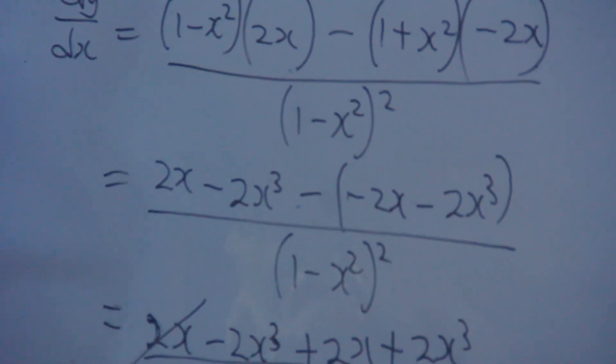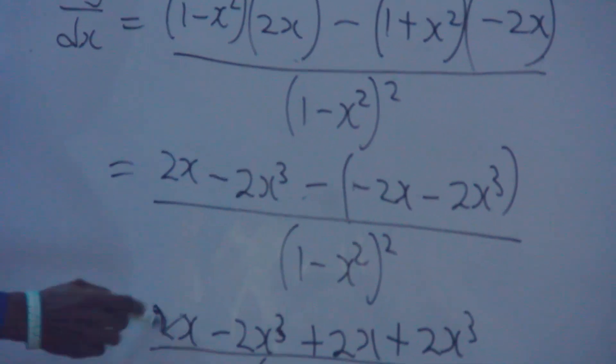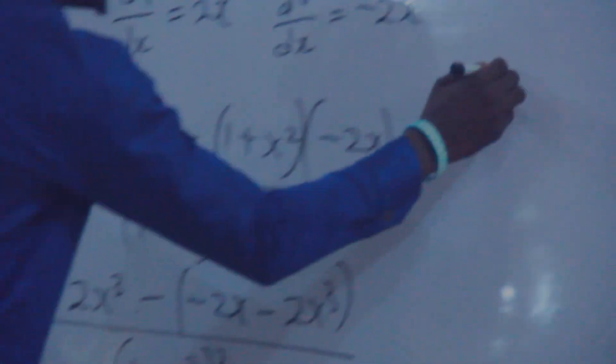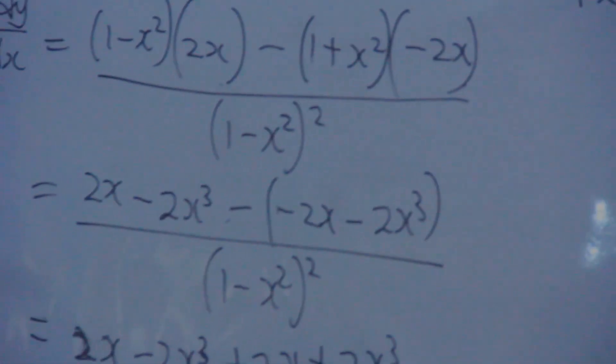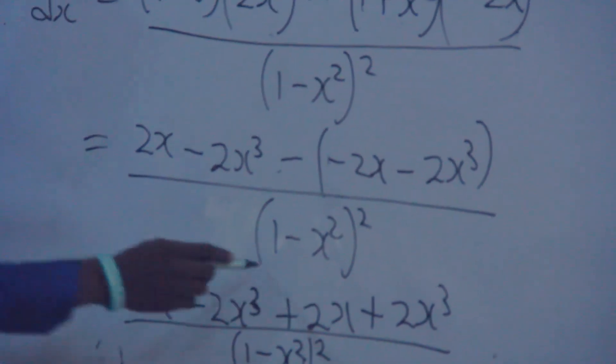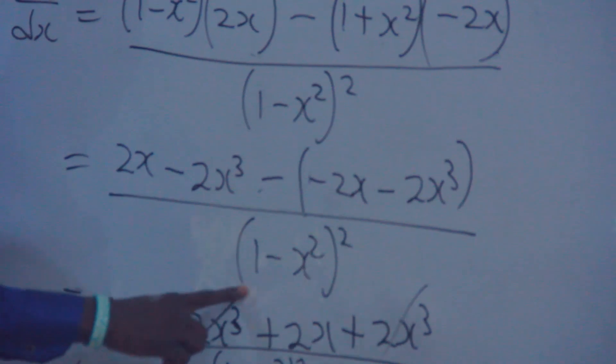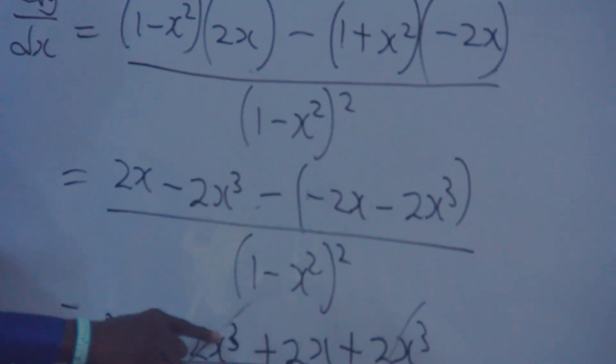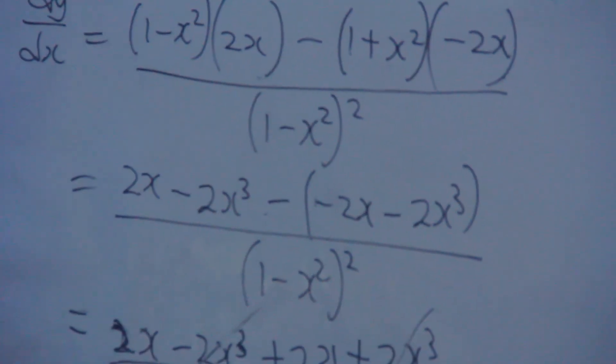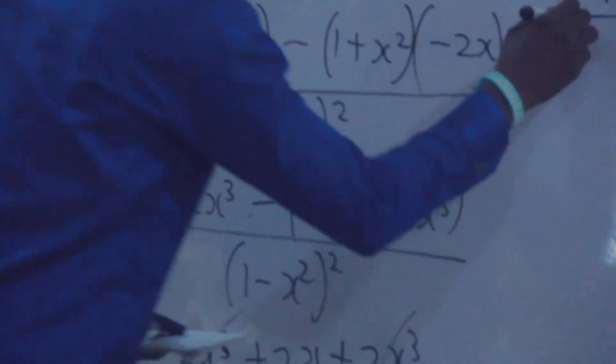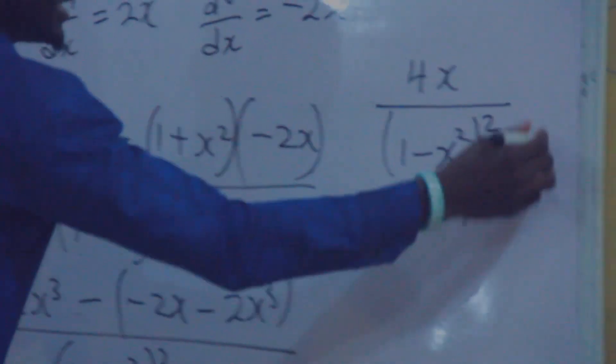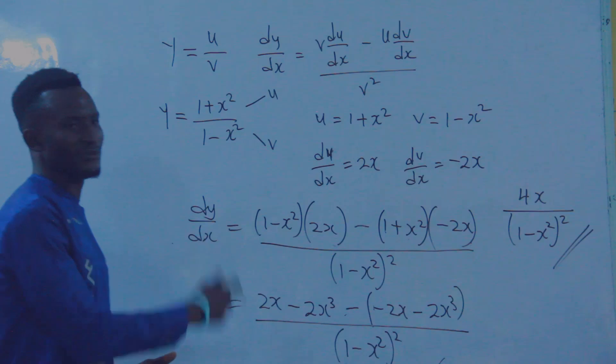If you check this very well, the 2x plus 2x becomes 4x. But the minus 2x cubed cancels with plus 2x cubed. That's zero. So the final answer is 4x over one minus x squared, squared. This is the final answer for this differentiation.